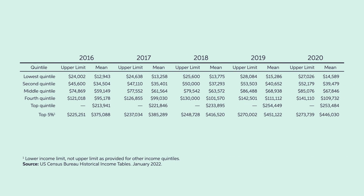Let's begin by presenting some recent stats about income distribution in the U.S. and the world. According to the Census Bureau and the Tax Policy Center, almost all quintiles of the U.S. income distribution have been growing since 2016. This table shows the upper limit and mean of each quintile group of U.S. household income from 2016 to 2020. Each quintile consists of 20% of U.S. households.